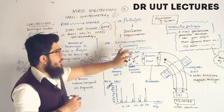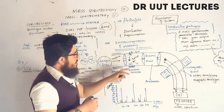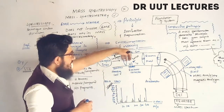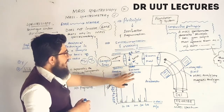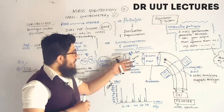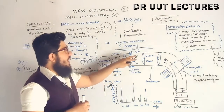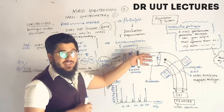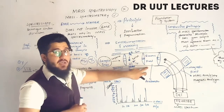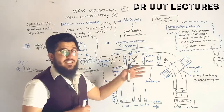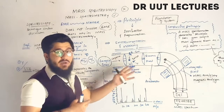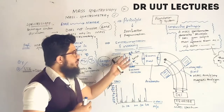Also present in the ionization chamber is an electron collector, which collects the electrons coming from the electron gun. After ionization, the ions move into the next chamber — the electric field chamber — which acts as an accelerator to accelerate the ions.